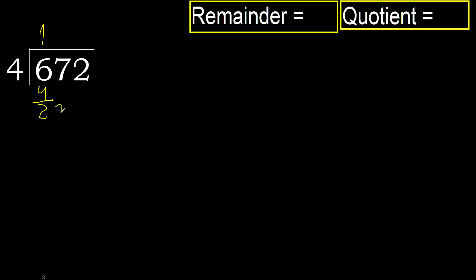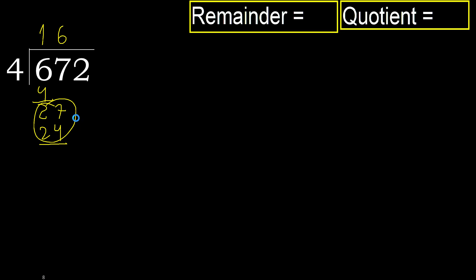Next, bring down: 27. 4 multiplied by 8 is 32 — greater. Multiply by 6 is 24 — not greater. Subtract.